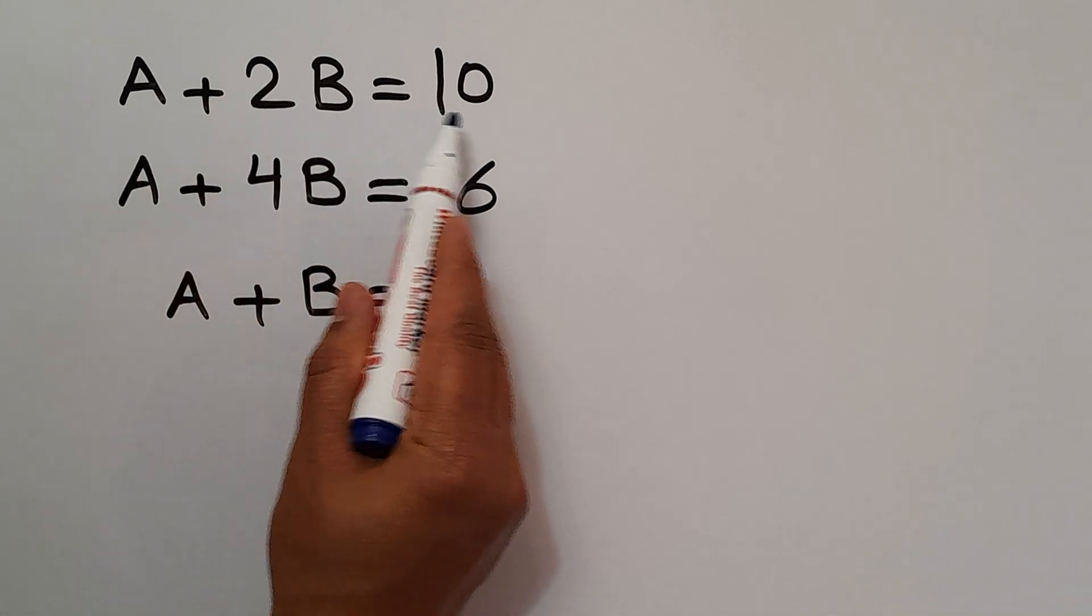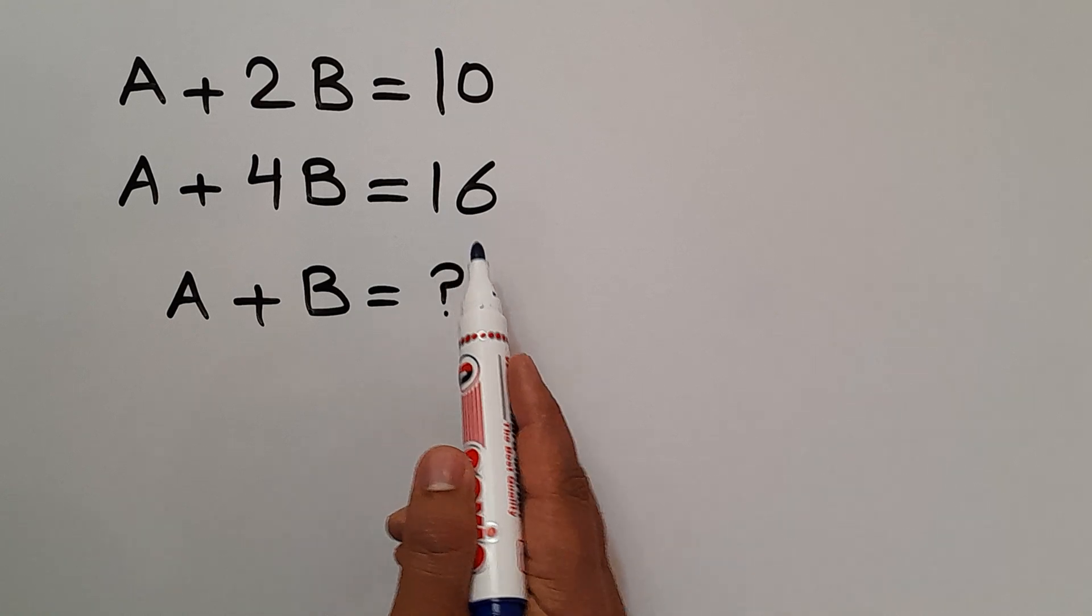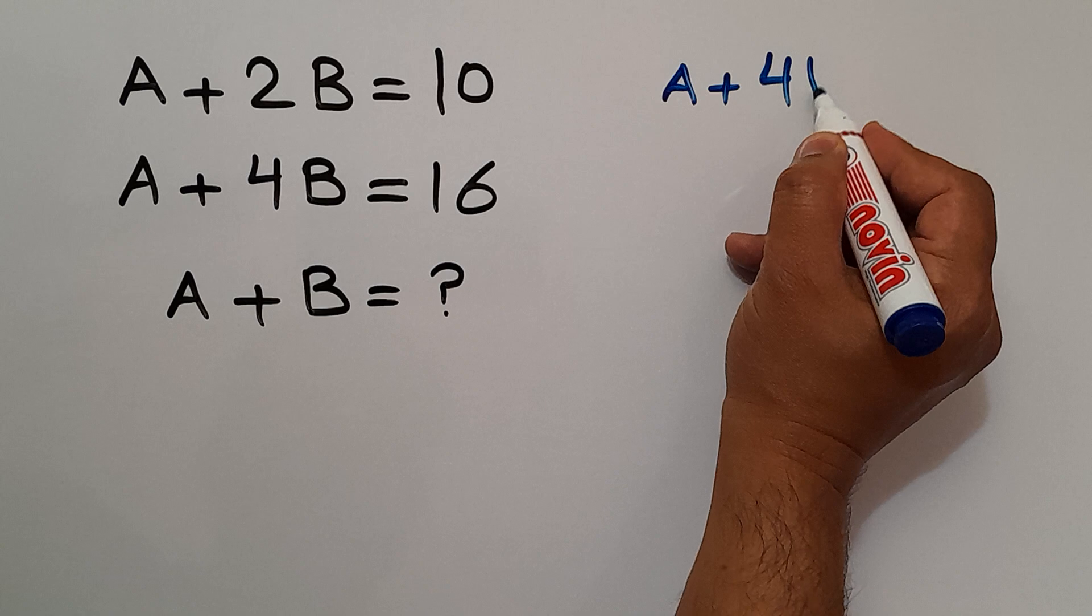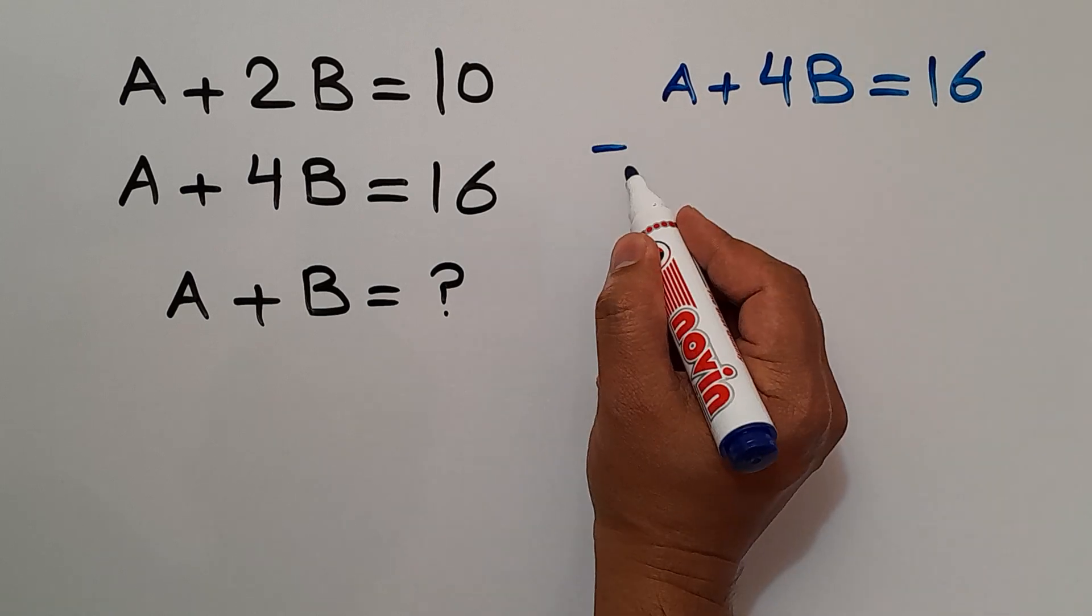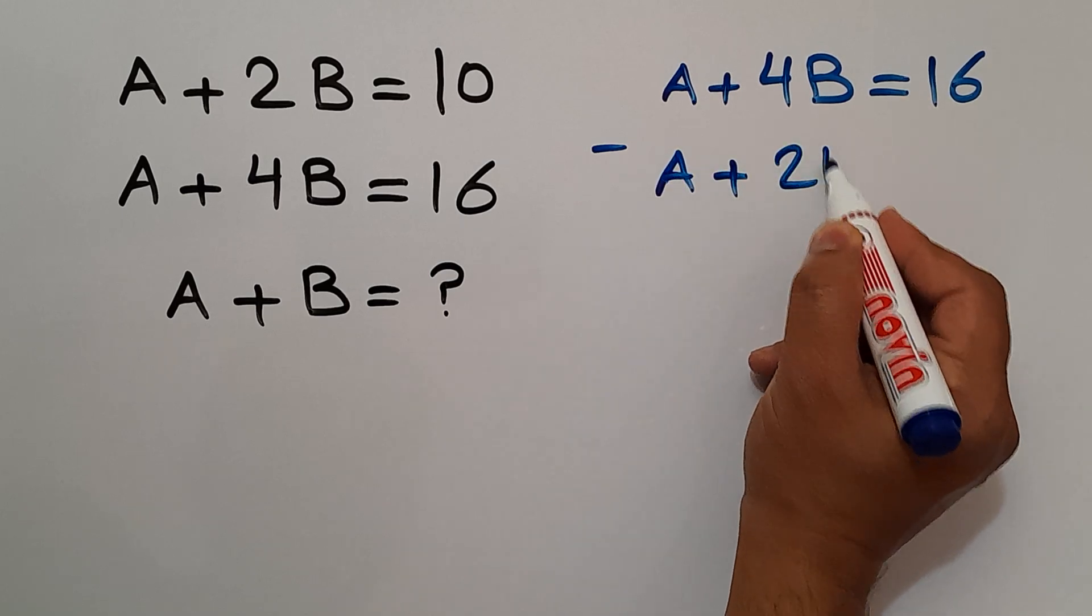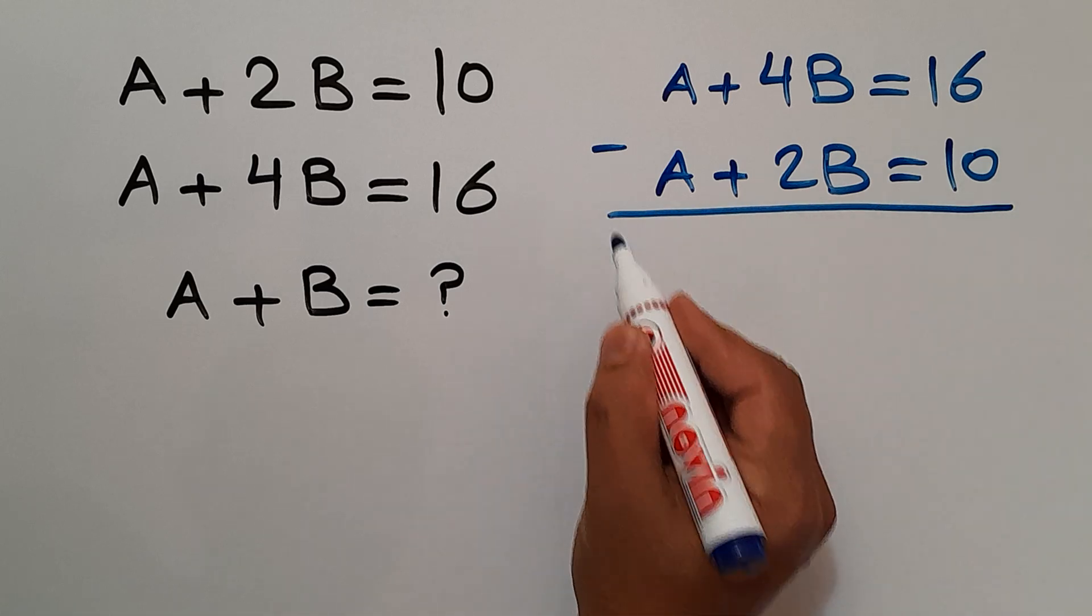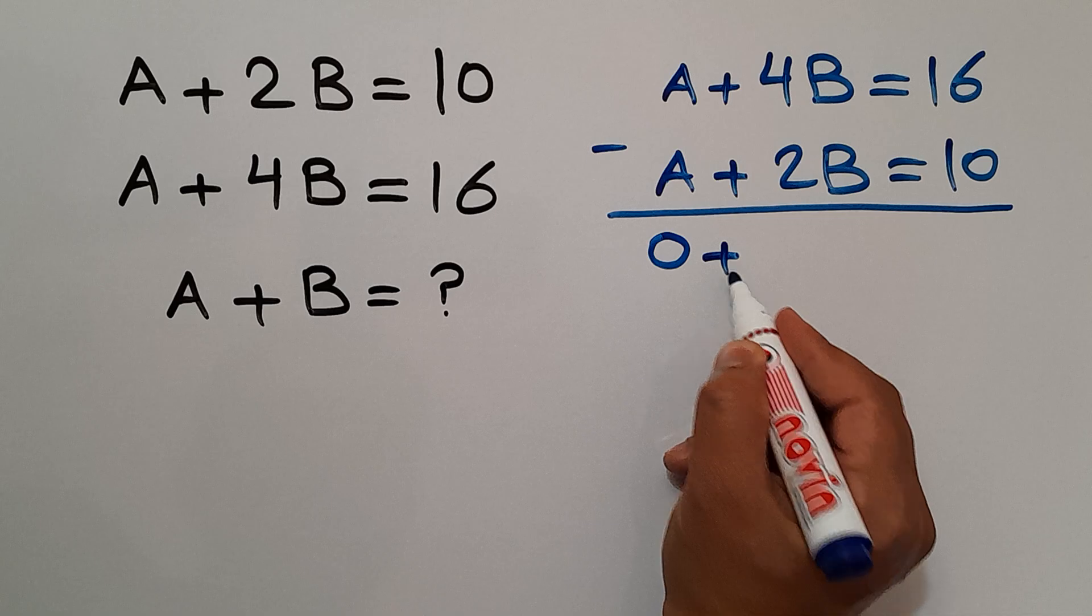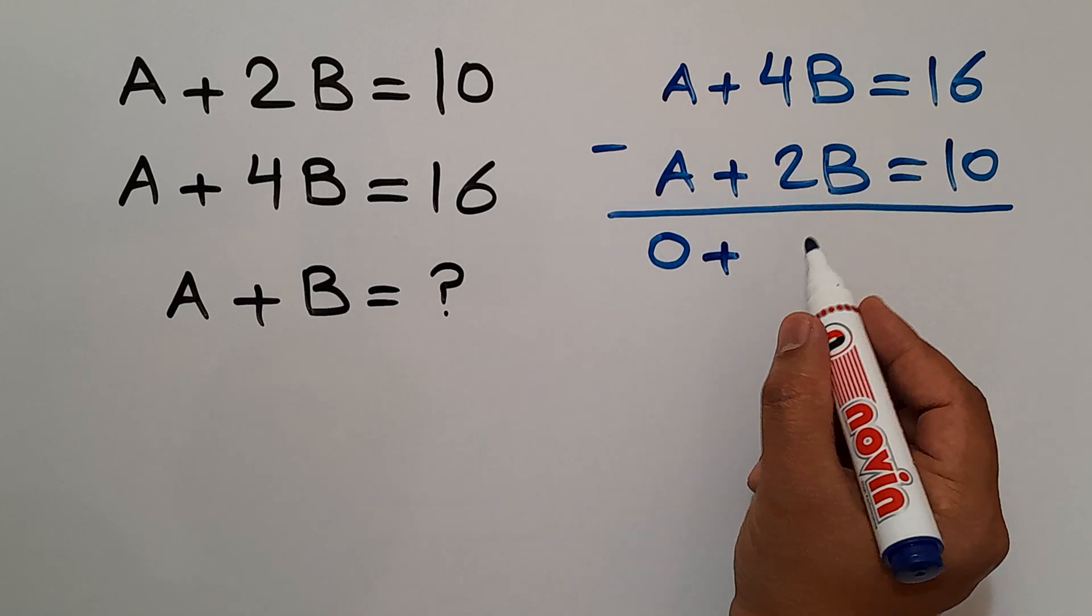So let's write the second equation: A plus 4B equals 16, minus the first equation: A plus 2B equals 10. Okay, A minus A gives us 0, plus 4B minus 2B which equals 2B, and equals 16 minus 10 which equals 6.